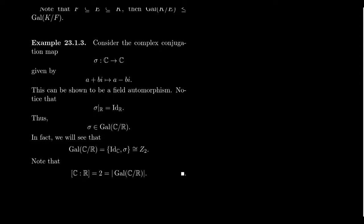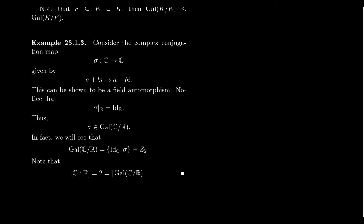So σ belongs to the Galois group Gal(ℂ/ℝ), and the identity map also fixes ℝ. One can show that these are the only two automorphisms, so Gal(ℂ/ℝ) = {id, σ}, a group of order 2 — the cyclic group of order 2. Note that the extension ℂ over ℝ has degree 2, and the Galois group also has order 2. This is not a coincidence; it's the key theorem we will prove later in this lecture.